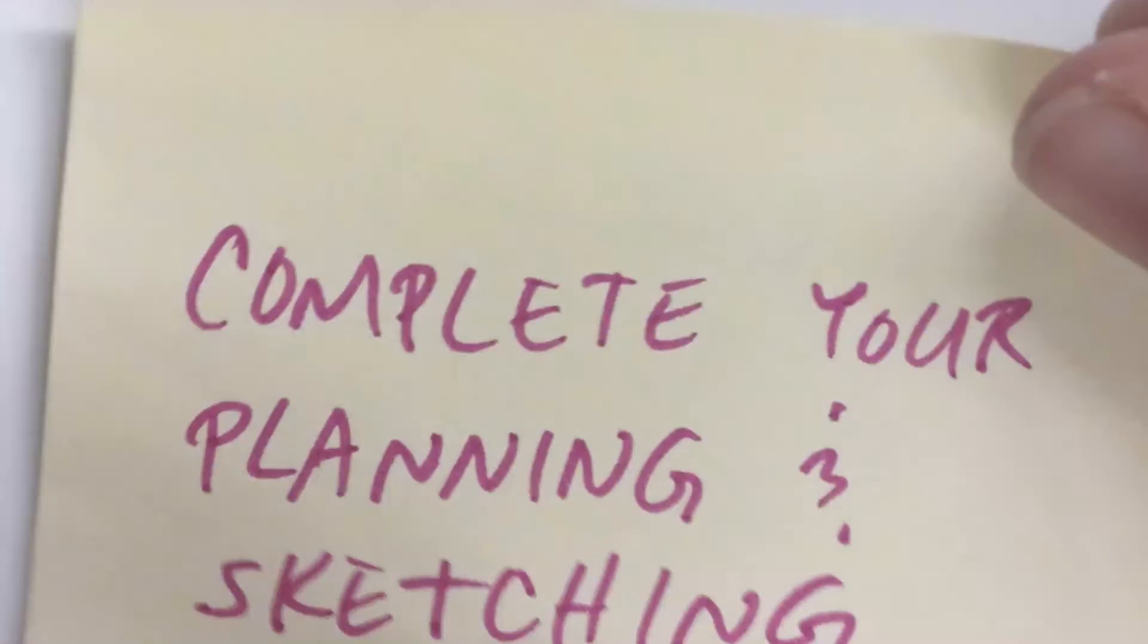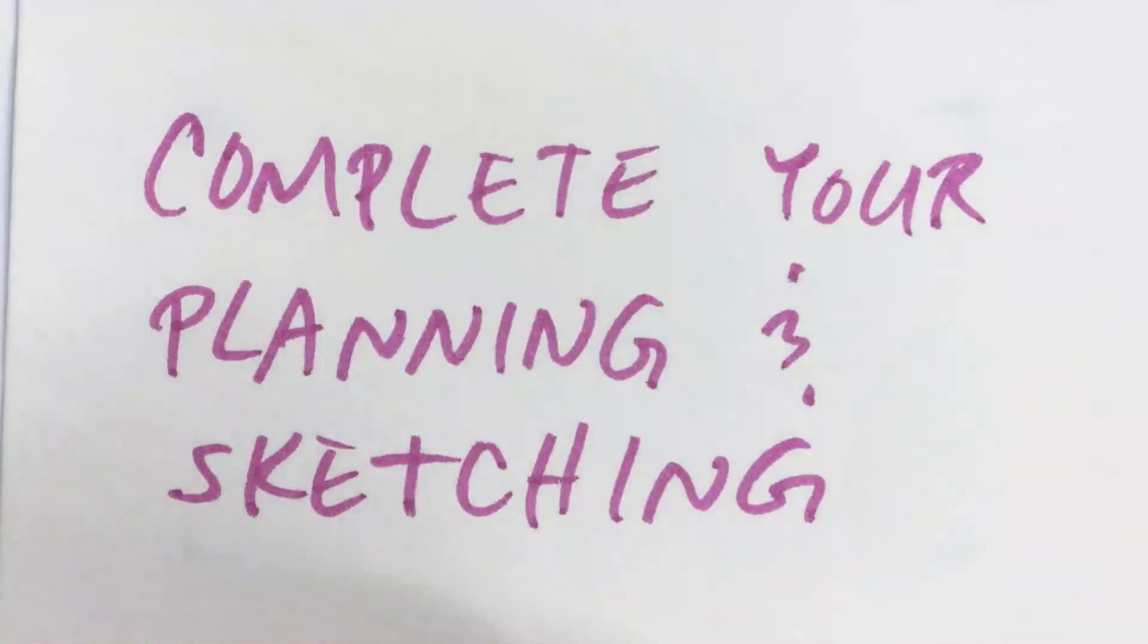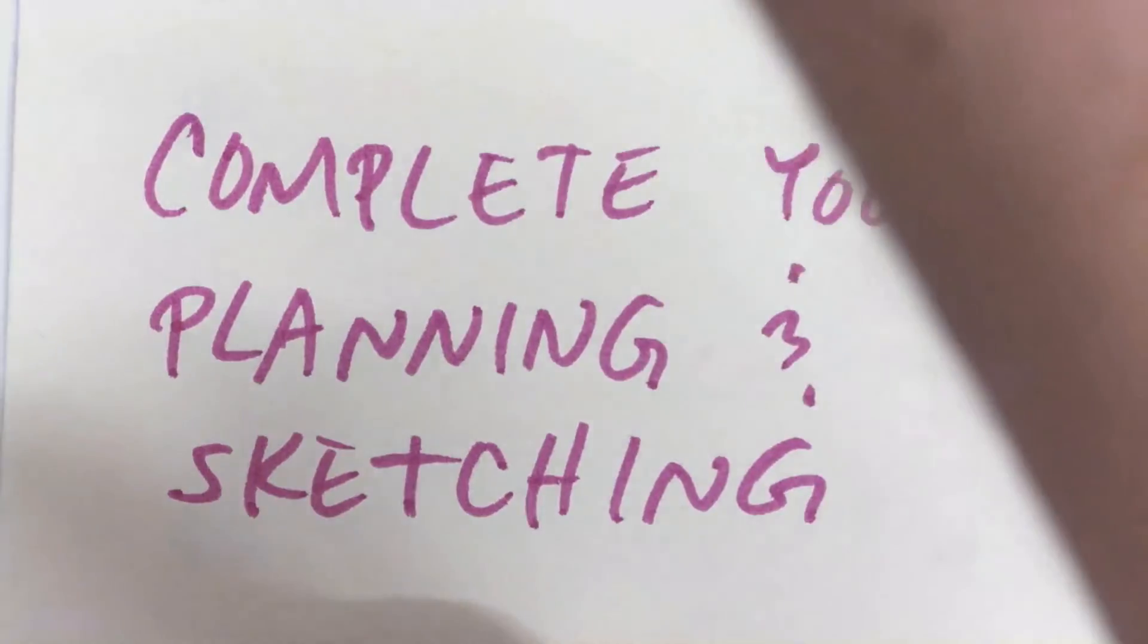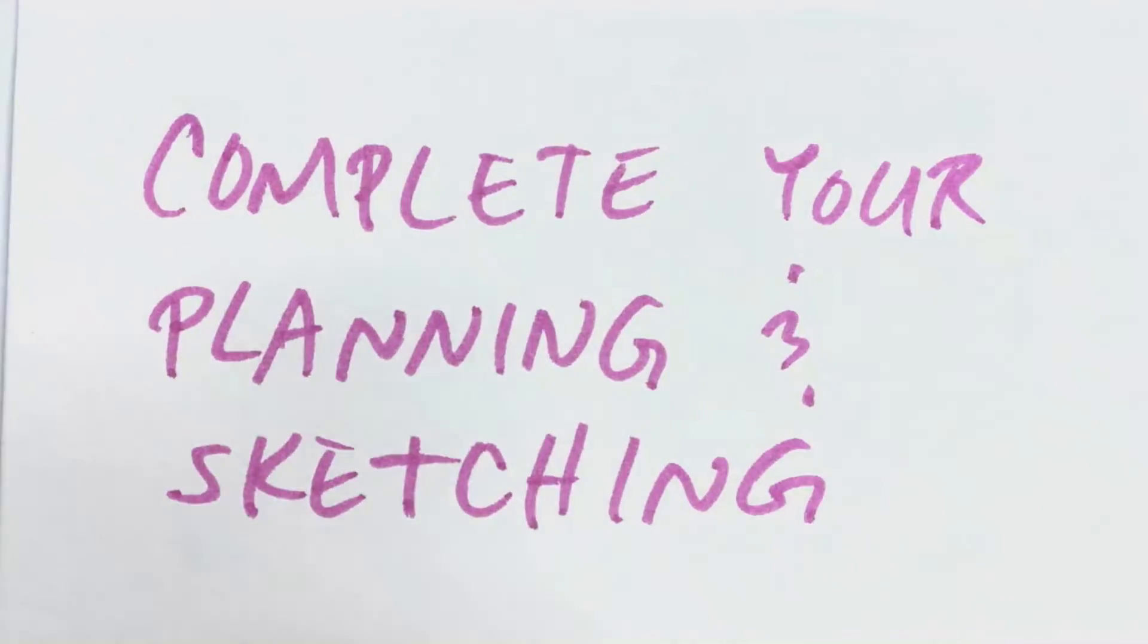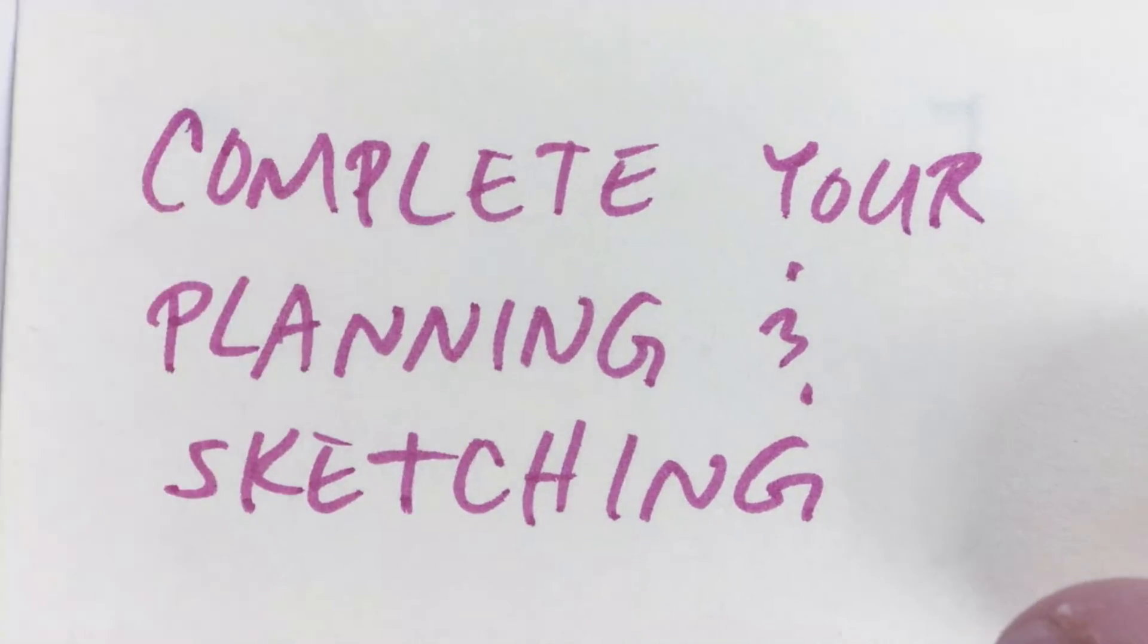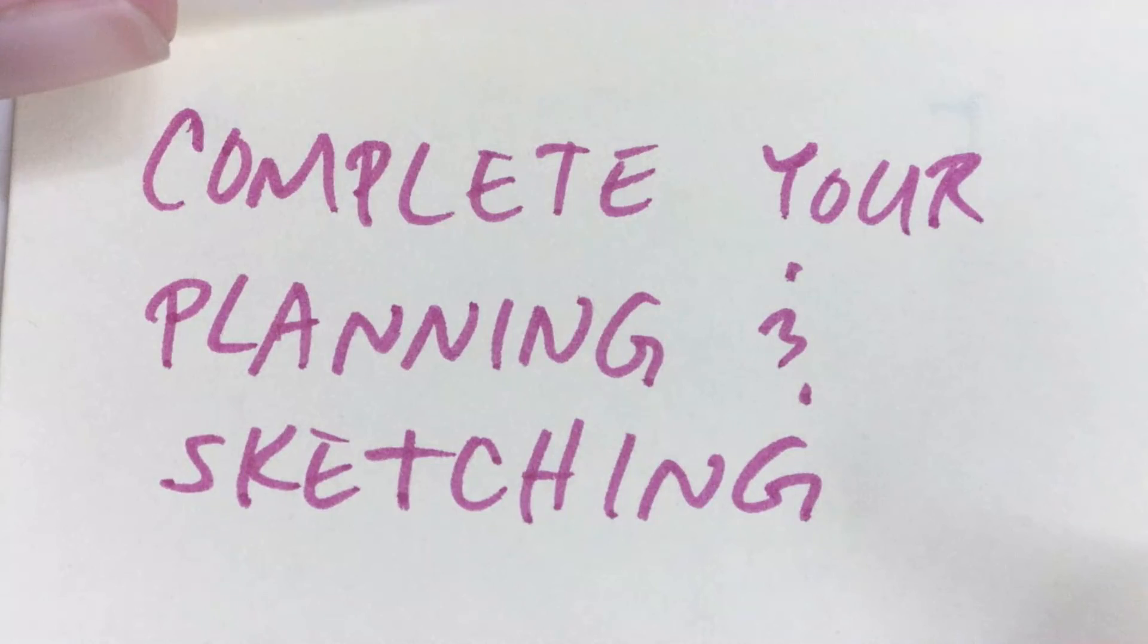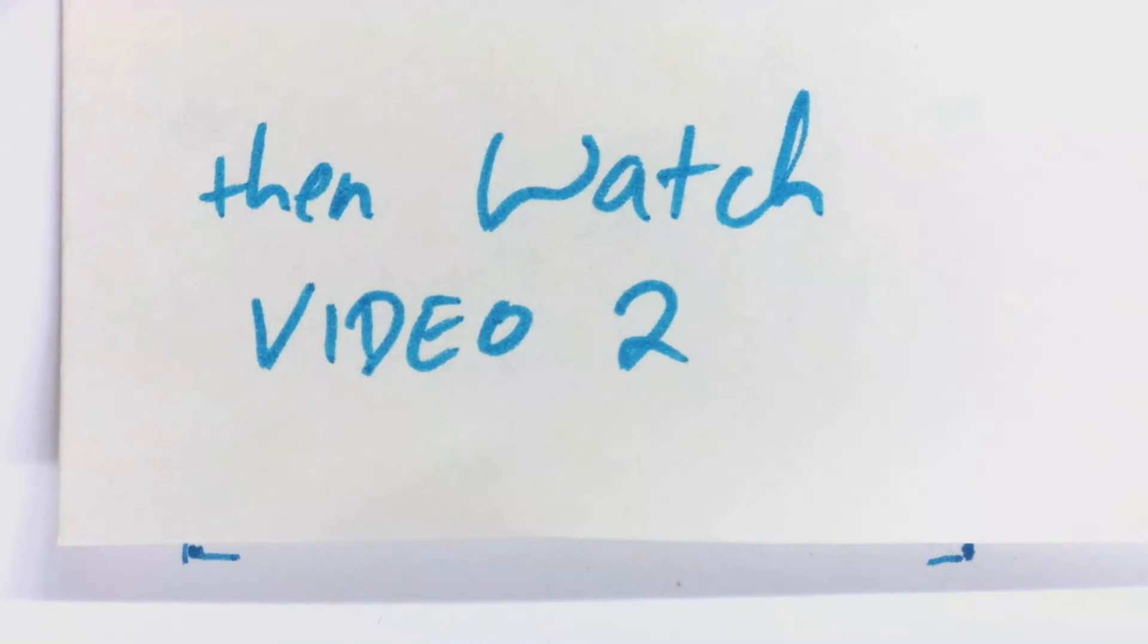That's it for video one on how to prepare and plan for your embossing. Before you watch video two, your job is to complete your planning, complete your sketching, sketching to scale, and once you've got your final sketch and you have completed your sketch to scale, then you can go ahead and watch video two, which is how to prepare to emboss.